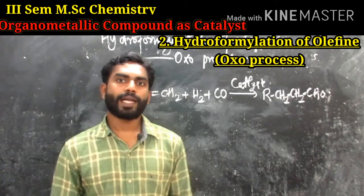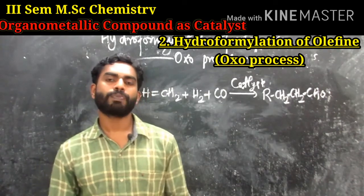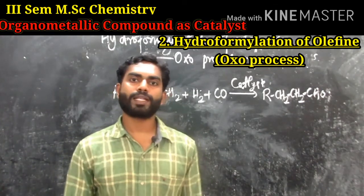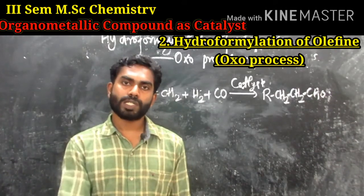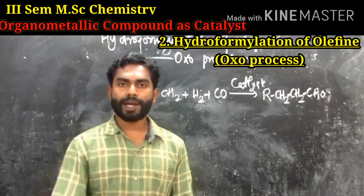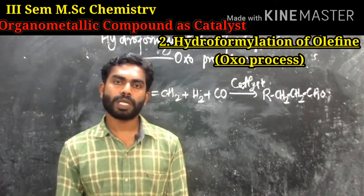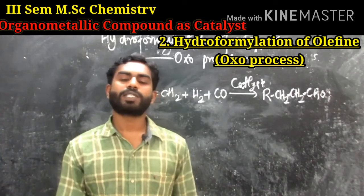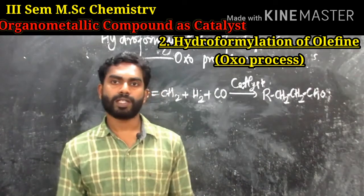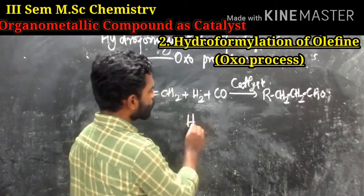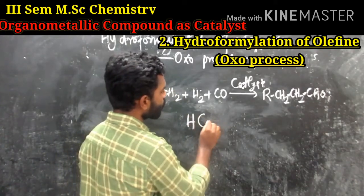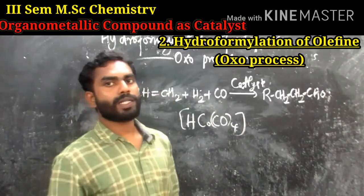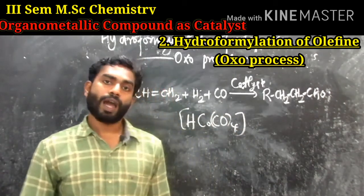The mechanism of hydroformylation of olefins uses an original cobalt catalyst. The original catalyst is Co₂(CO)₈, and the active catalytic form is HCo(CO)₄, which is a five-coordinated species. The reactants are olefin, H₂, CO, and Co₂(CO)₈.